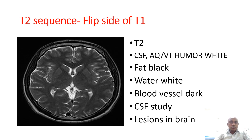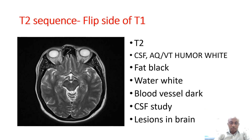T2 sequence is just the flip side of T1. In T2, CSF, aqueous humor, and vitreous humor look white. Fat looks black, so myelin and white matter look black. Water such as CSF means ventricles look white. Blood vessels look dark. T2 is mostly used for CSF studies and lesions in the brain.